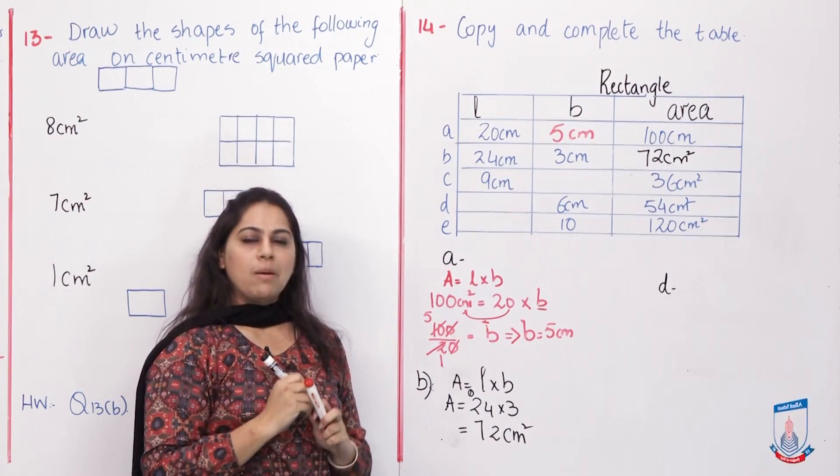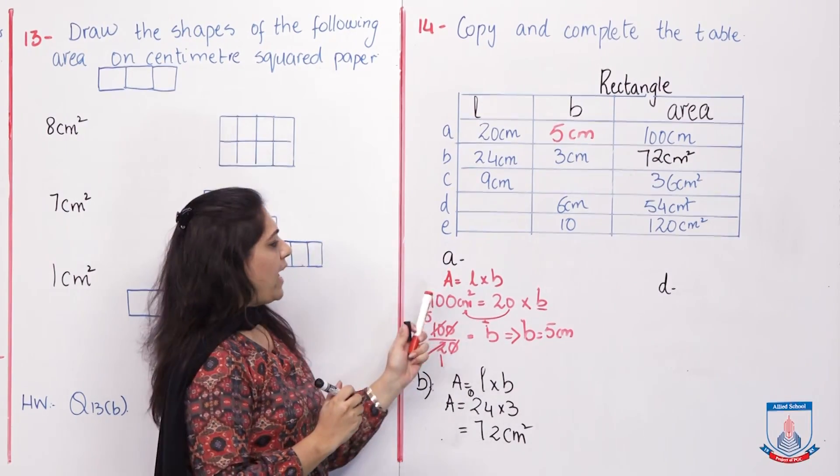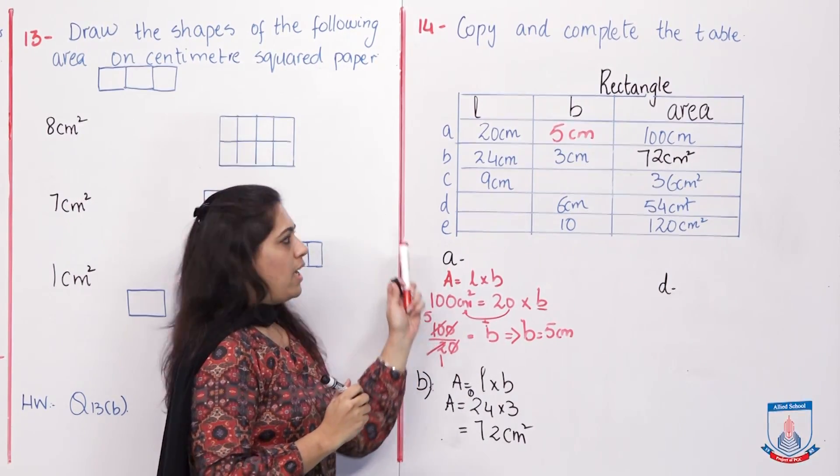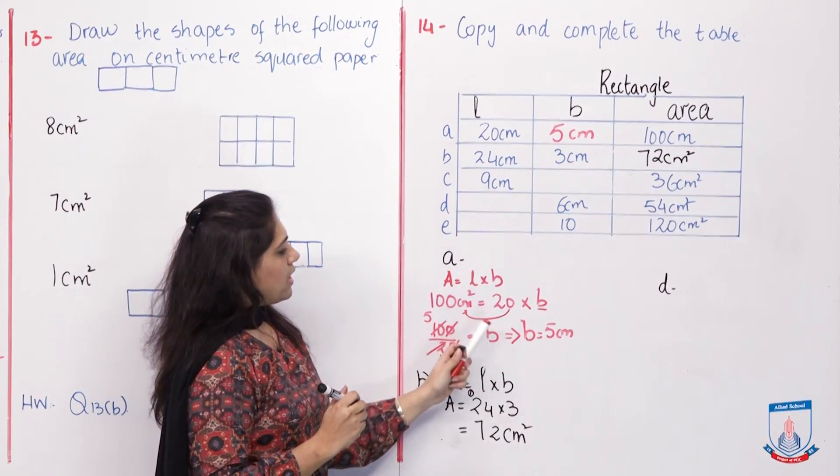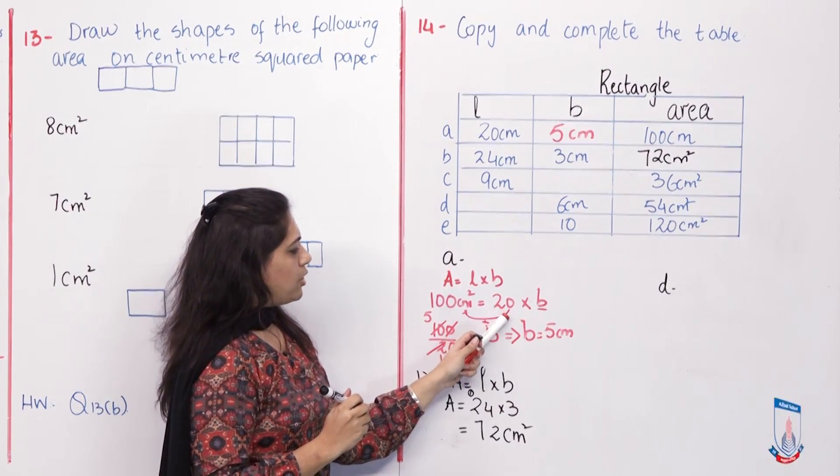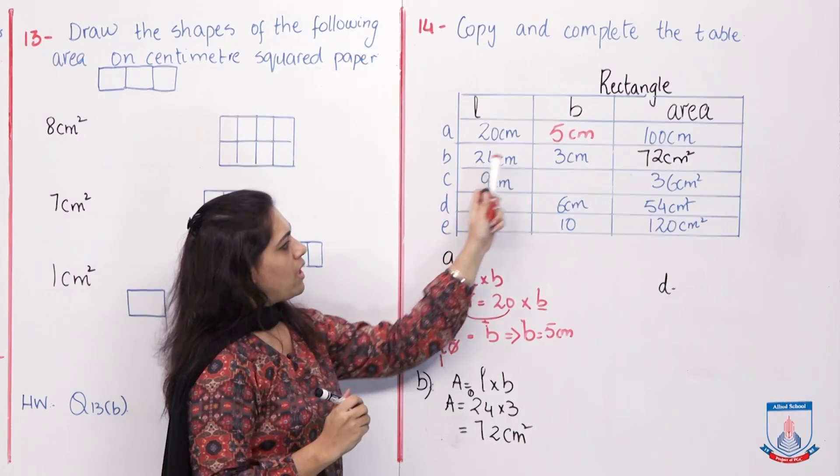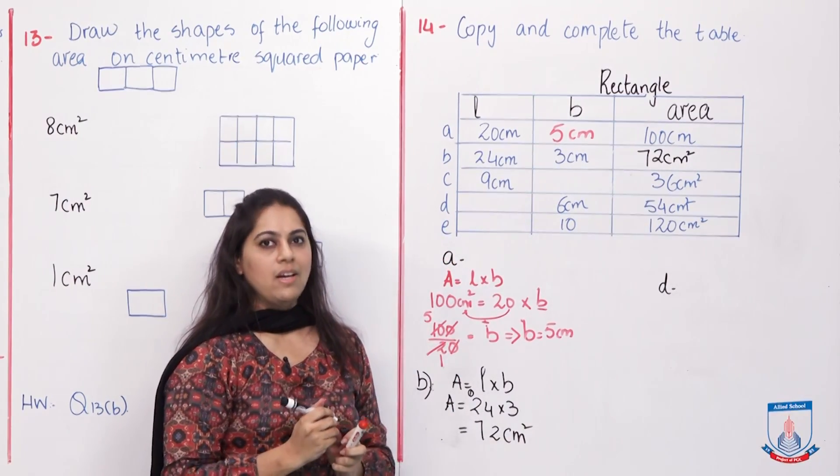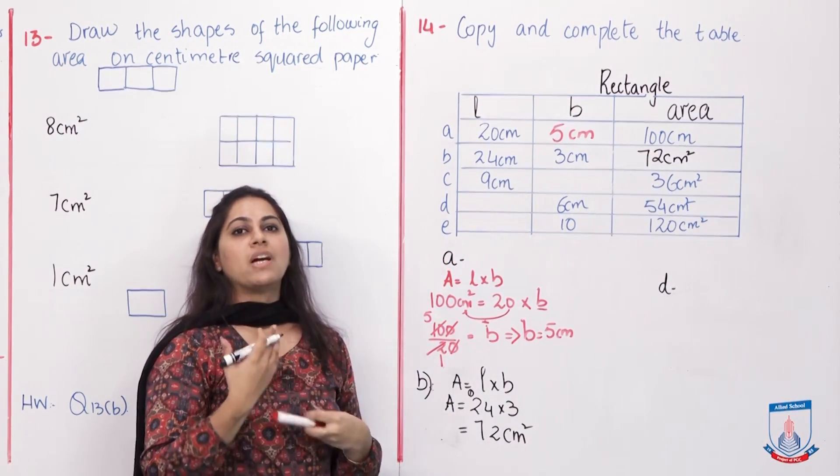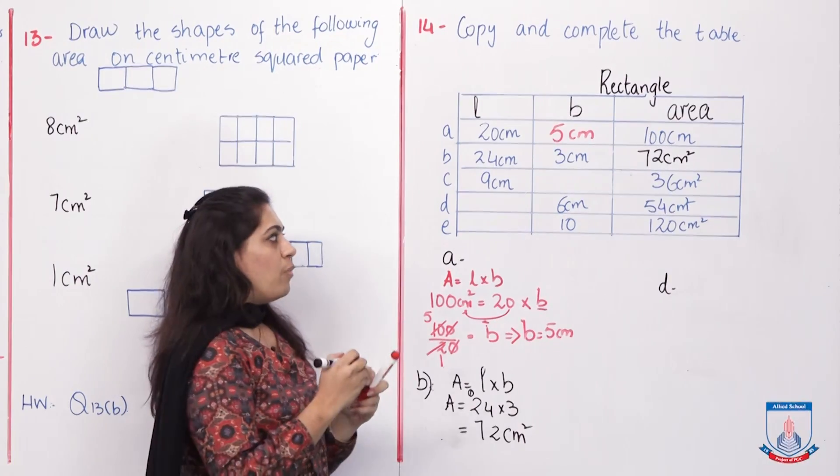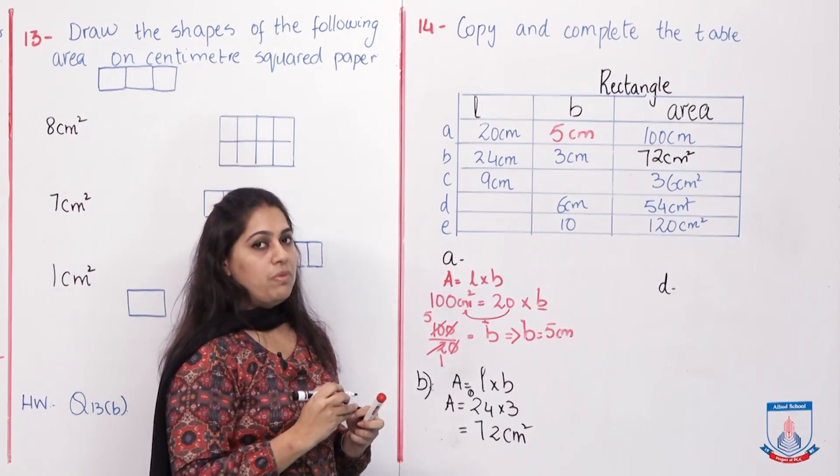So my answer would be 72 cm square. In the same way, C part is similar to A part. It is very easy. Children, you will try this at home with the help of this example. You have length given. You will write length here, then you will divide the area by length. I think children have already started doing it in their minds. Very well done. Do this as homework.